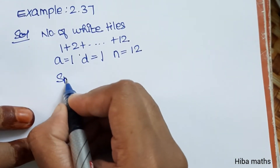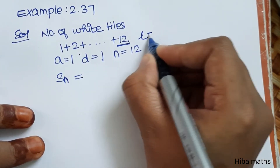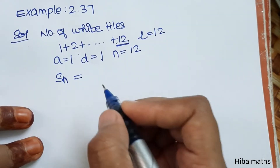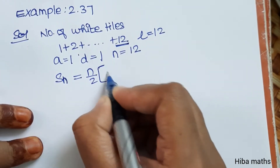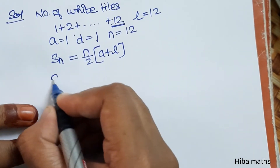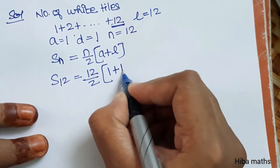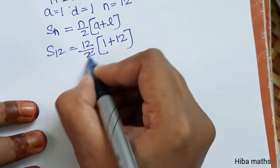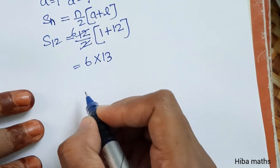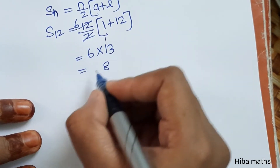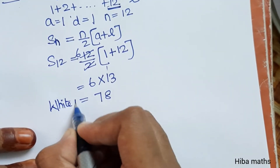Now, the sum S of n is what we need, in terms of the last number. The number of terms n is 12. So, using the formula S of n equals n by 2 times (a plus l): S of 12 equals 12 by 2 times (1 plus 12), which is 6 times 13, giving 78. This is the number of white tiles.